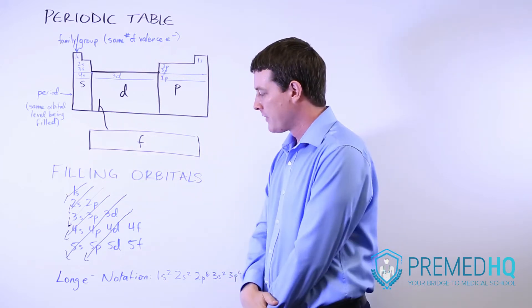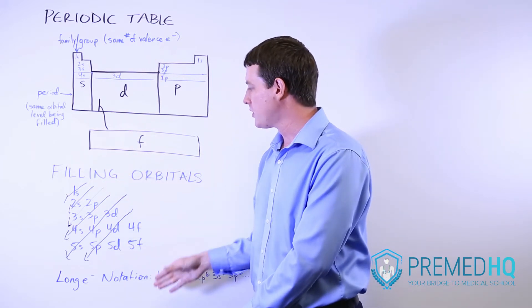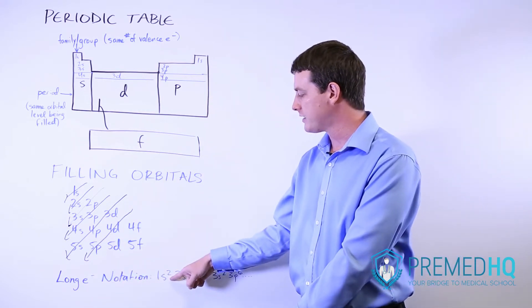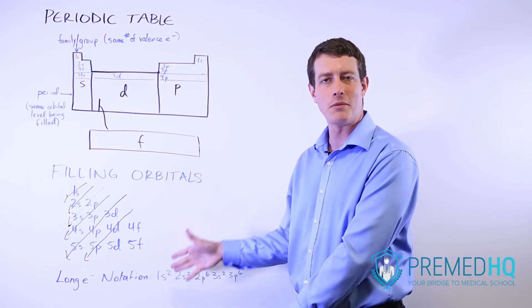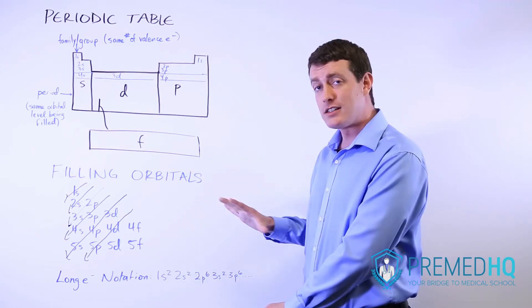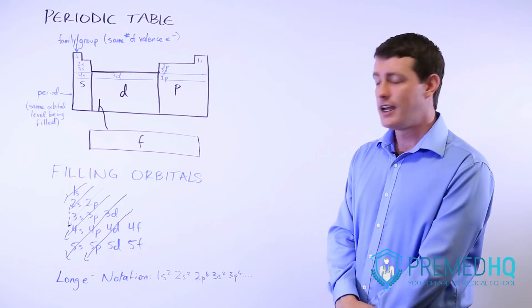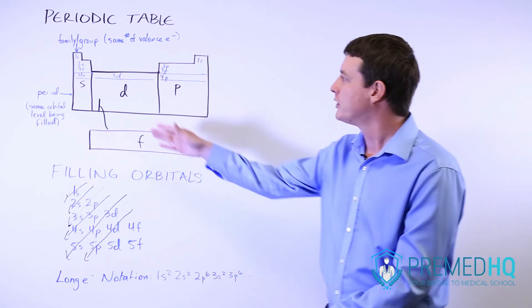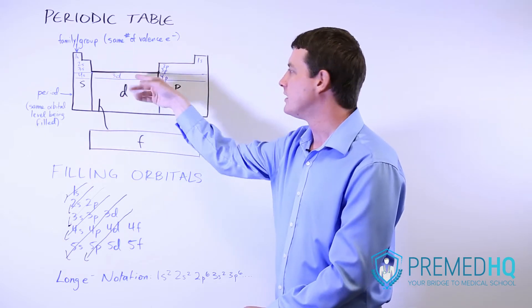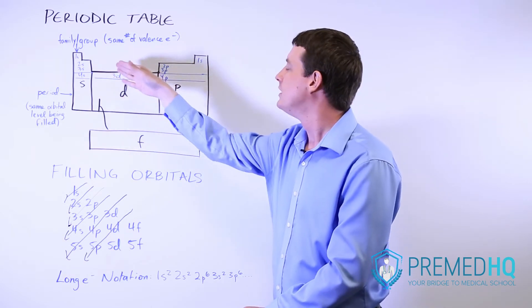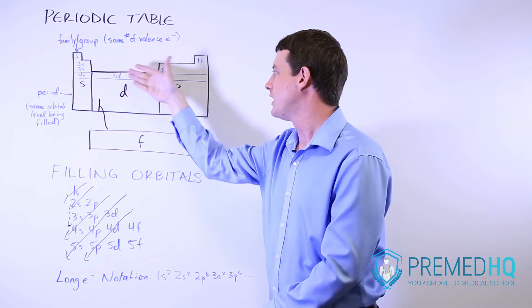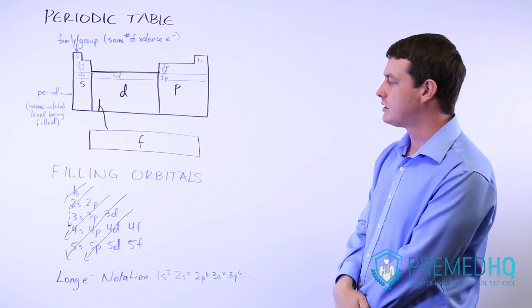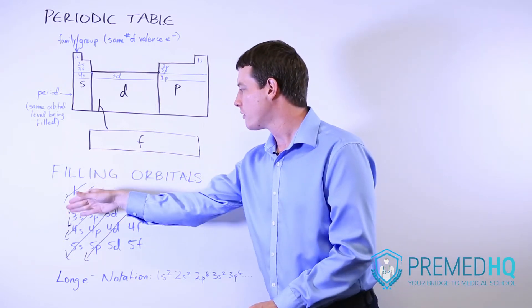You can also see orbitals being filled with a long electron notation where they'll show you, for example, 1s and then the superscript 2 will tell you how many electrons are in that orbital level. That's another way they can identify atoms, because if you know exactly how many electrons are there you can count into, for example, the 3d level and see which element shows up when you have some certain number in the d orbital.